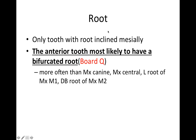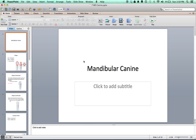Regarding the root: this is the only tooth with a root that is inclined mesially — any time a tooth is the only one or an exception, remember it because they like to ask questions on that. This tooth is also the anterior tooth most likely to have a bifurcated root, more so than the maxillary canine, maxillary central, and all the other anteriors.